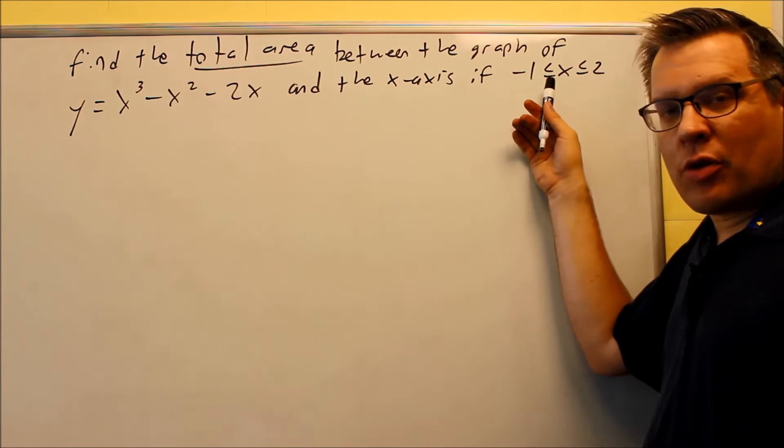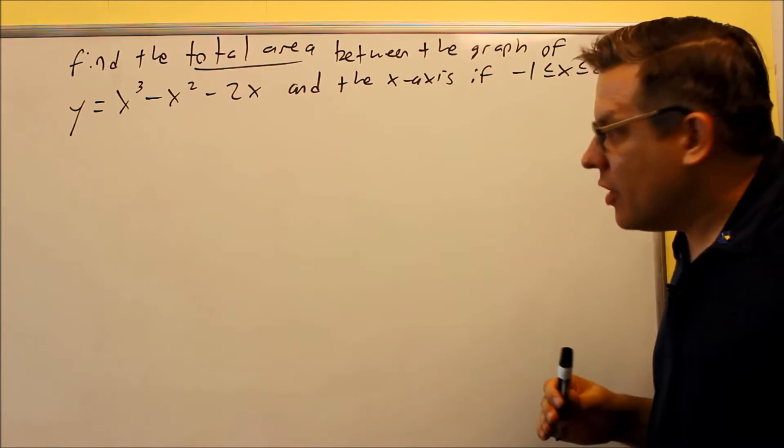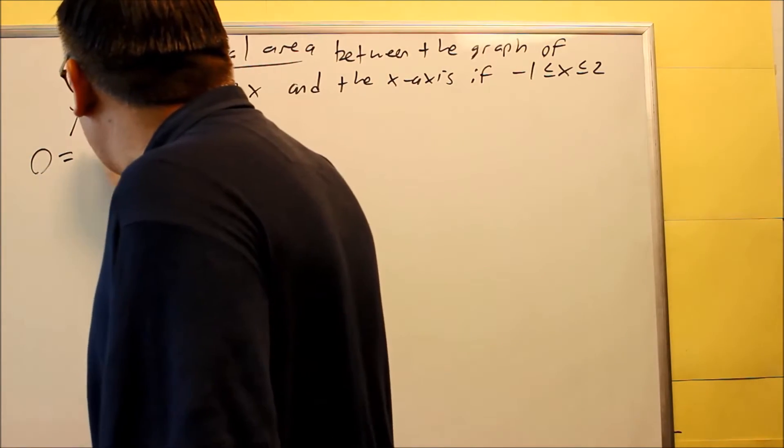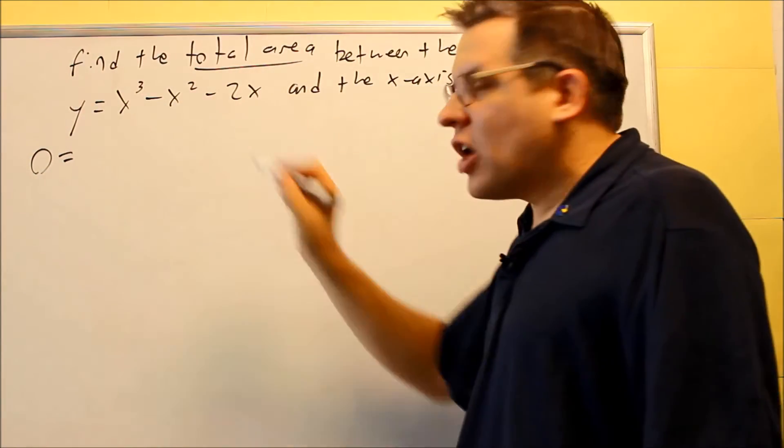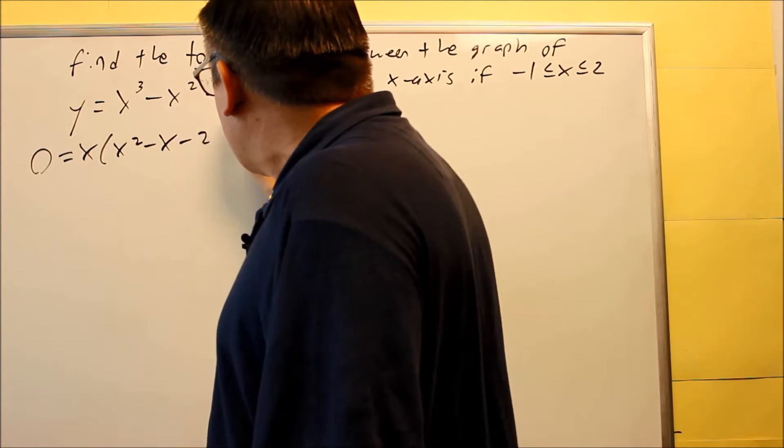We want to find out what the sub-interval is and that's going to involve setting it equal to zero because that's where it splits up the positive and negative areas. So we're going to set this equal to zero, zero equals this whole thing here. Now to solve that, we're going to do some factoring. Take out x, x squared minus x minus two.